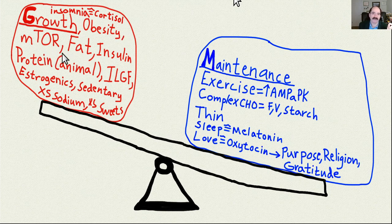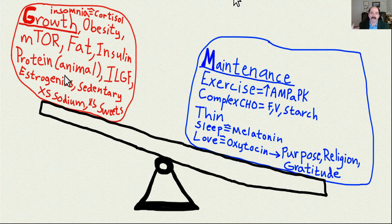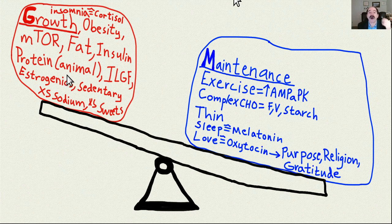Activation of mTOR is primarily caused by dietary fat and dietary protein — especially animal protein. Animal protein is unique; it has a different amino acid composition than plant protein. Animal protein has a lot more leucine in particular, which is the most powerful activator of mTOR. Also lysine and methionine. Meat is just the biggest cancer promoter — the more you study it, the more you'll notice that. Meat is basically animal protein and fat, and both of those things activate mTOR.